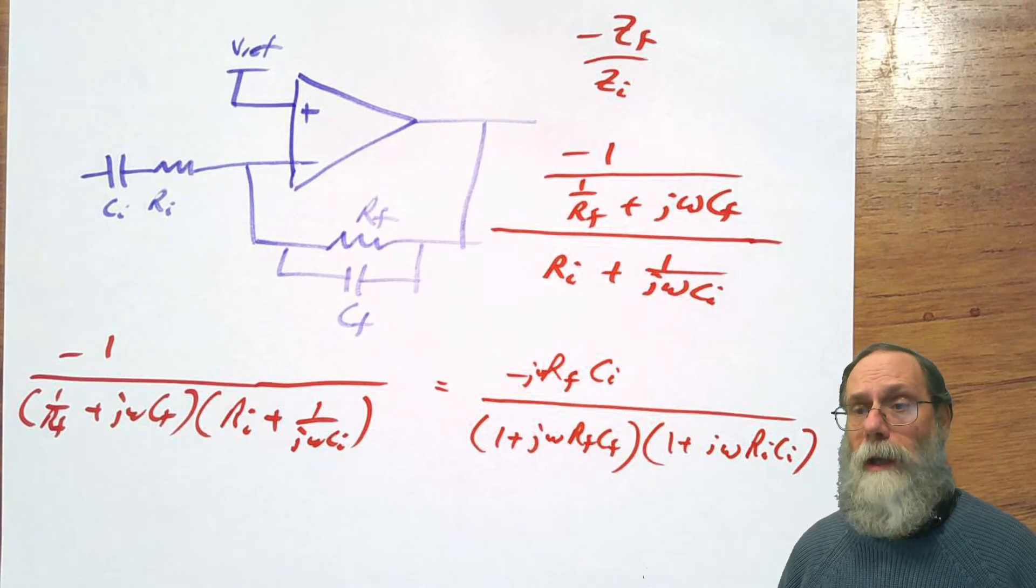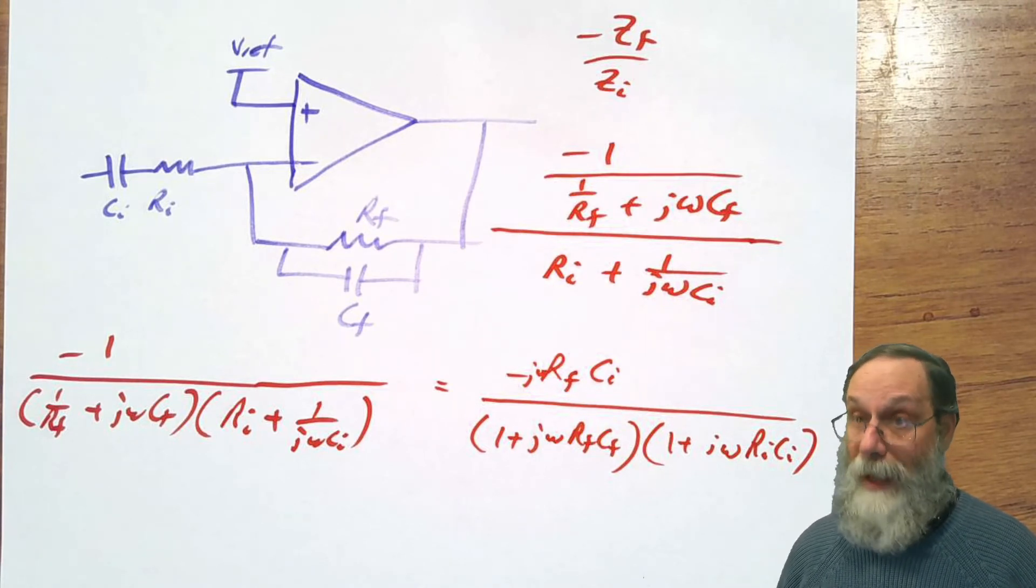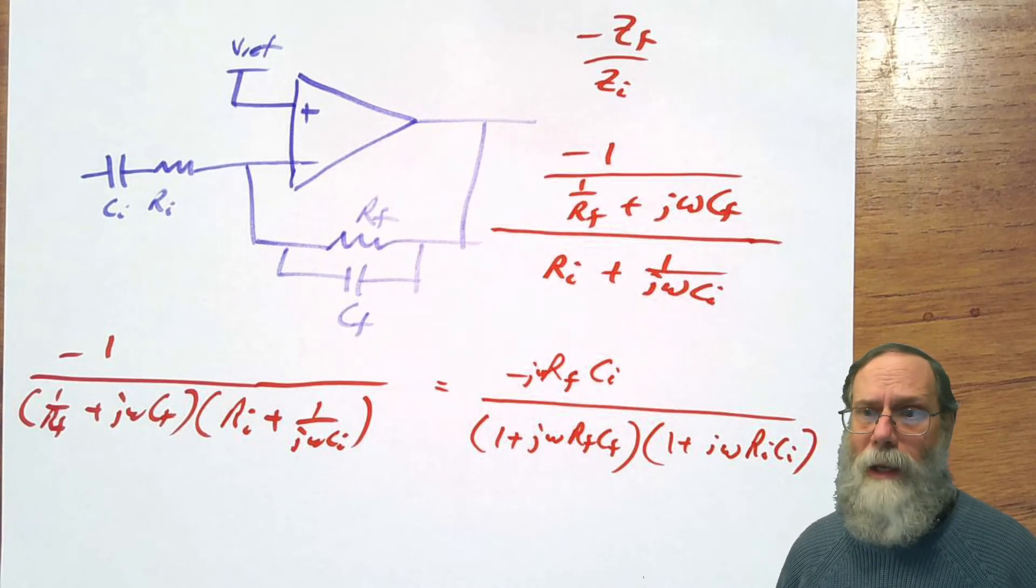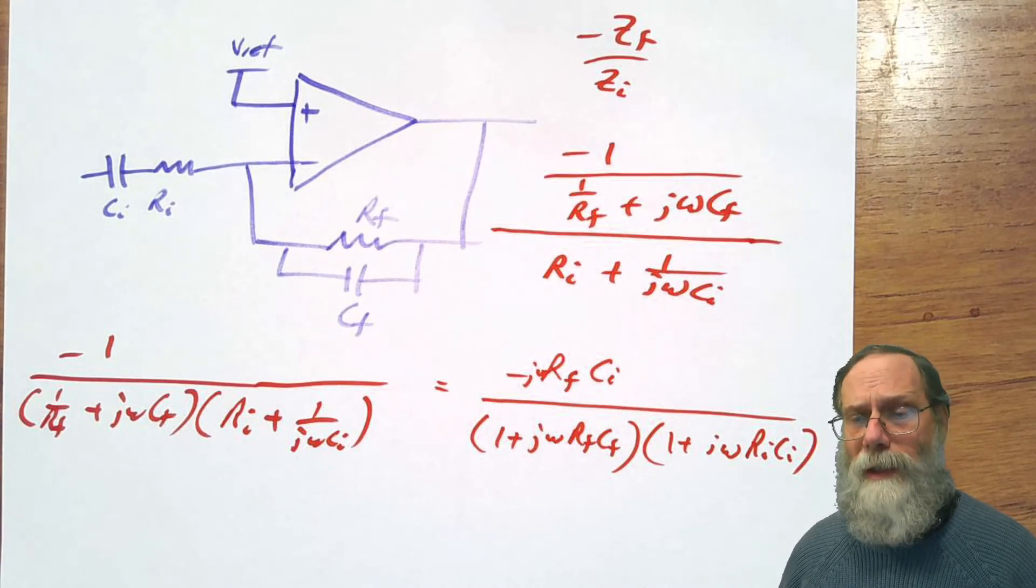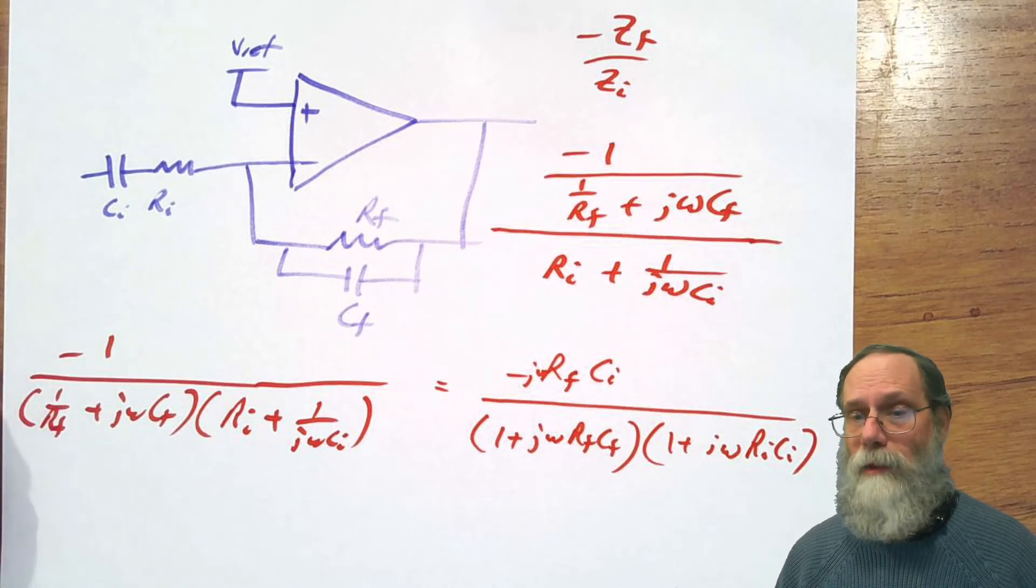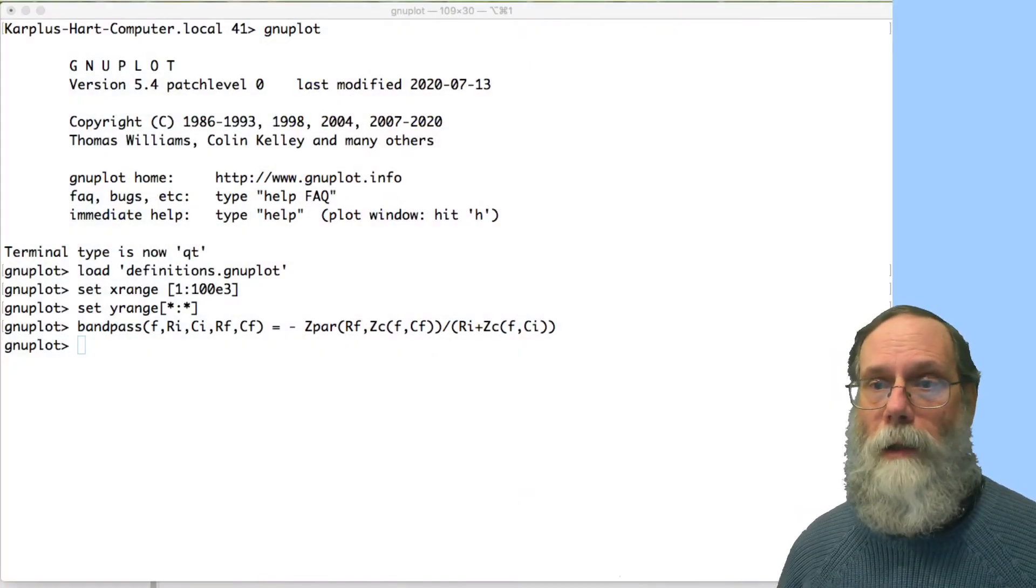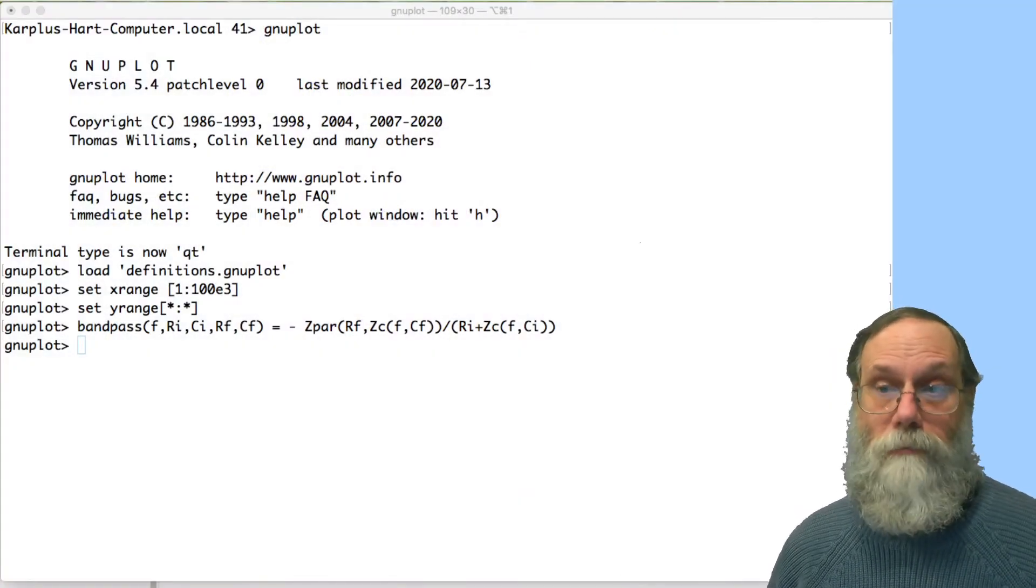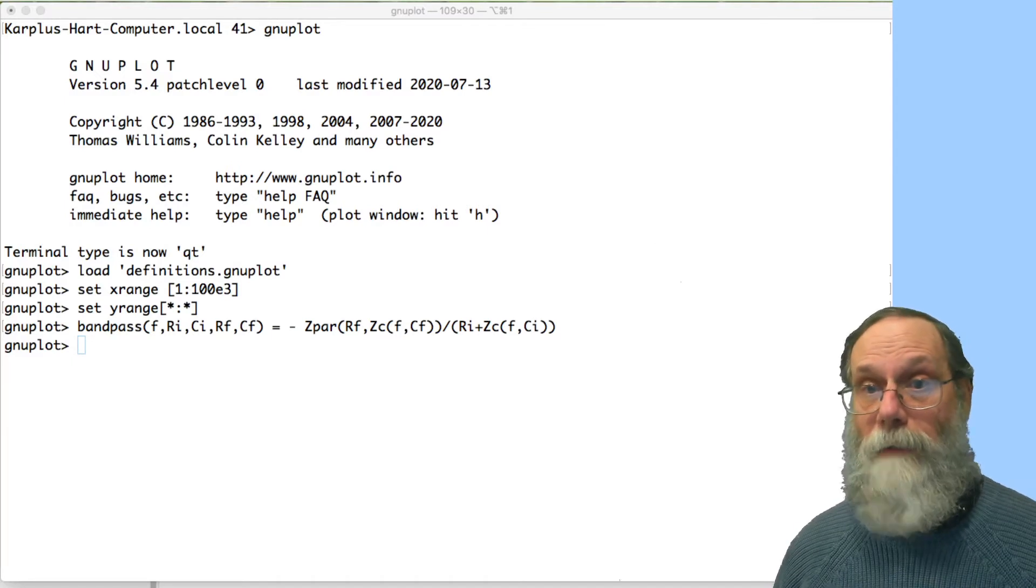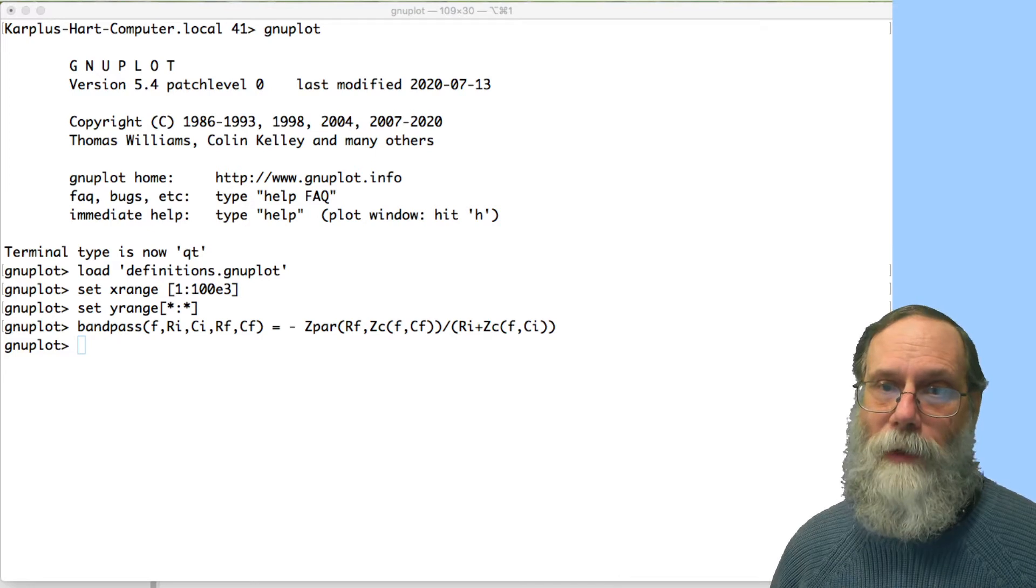What we want to do is look at several different things. I'm going to claim that this is a bandpass amplifier. And perhaps before we go looking at the details of that, let's just plot this thing with GNUplot and take a look at it with some typical examples.